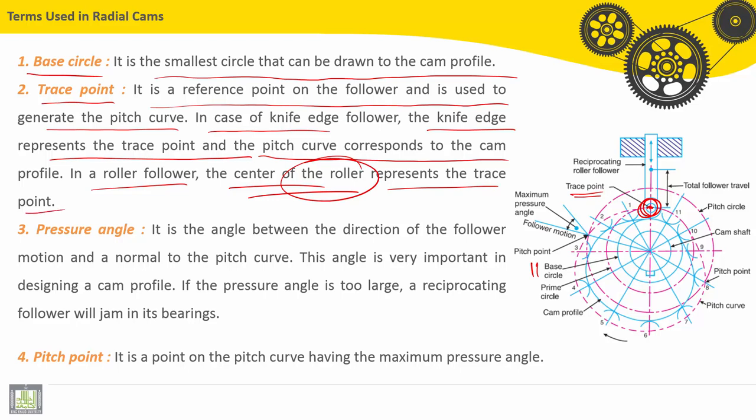Third term used in radial cams, it is called the pressure angle. Here we have the pressure angle. It is the angle between the direction of the follower motion and a normal to the pitch curve. This angle is very important in designing a cam profile. If the pressure angle is too large, a reciprocating follower will jam in its bearing.